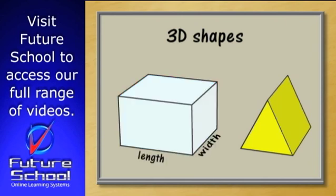For example, if you start with length and width in two dimensions, to make a prism, you have to give the shape height as well.